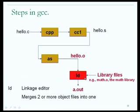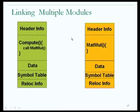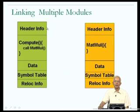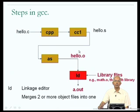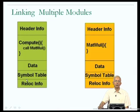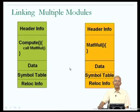The situation in linking is that I have two object files — hello.o and math.o. If my program is using a math function, then I would need to link hello.o along with math.o to generate a.out. Each one of these object files contains header information, code, data, symbol table, and relocation information.